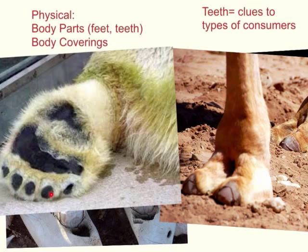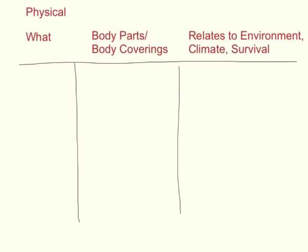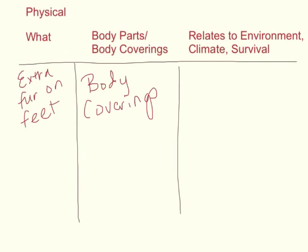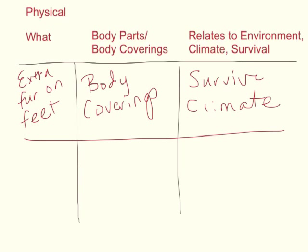The foot on the right is a camel's foot and the foot on the left is a polar bear's. This chart is designed to help you organize and better understand different physical adaptations, broken into three columns: the 'what,' the type of physical adaptation, and how it relates to the environment, climate, or survival of the animal. For example, extra fur on feet relates to body coverings, which further relates to how the animal survives in a very cold climate. This table is a tool to help you classify and break down different types of physical adaptations — animals will have multiple physical adaptations, so this helps break it into smaller chunks.